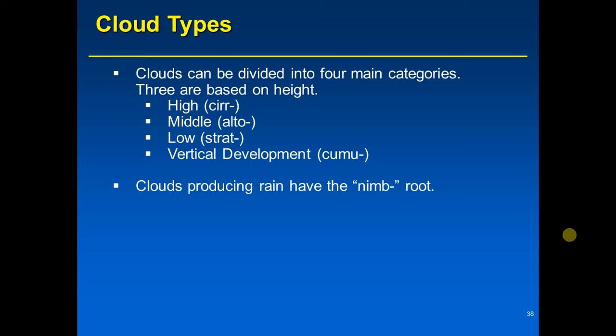The two clouds that can produce rain are nimbostratus and cumulonimbus. Nimbostratus is a low cloud — you can see 'strat' in the name — whereas cumulonimbus, beginning with the prefix 'cumul-', is a cloud of vertical development. Nimbostratus tends to produce light to moderate steady precipitation, whereas cumulonimbus produces heavy, more showery precipitation.